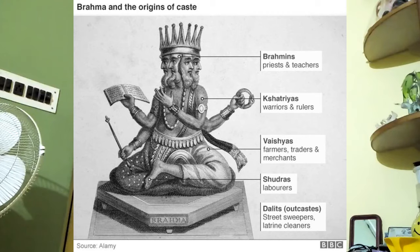Apart from the four main castes, there was another group called the Outcasts, also known as Dalits. They were literally the untouchables in Hinduism. The upper castes did not want to touch or even go near the outcasts or the untouchables.